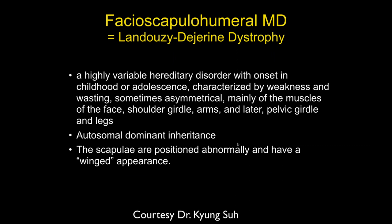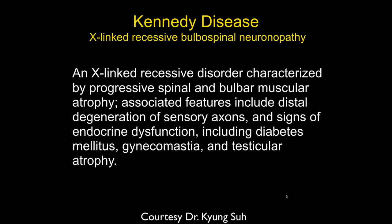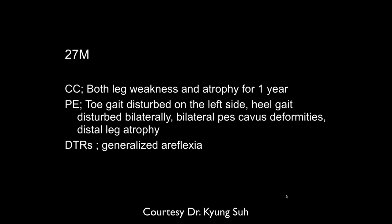It's asymmetric but still involves both sides, and this can be very variable. Again, this shows that you have to make the diagnosis based upon non-imaging findings. Another case of muscular dystrophy: 44-year-old male with weakness showing small to moderate fatty atrophy of the peroneal muscles bilaterally — another congenital muscular dystrophy.